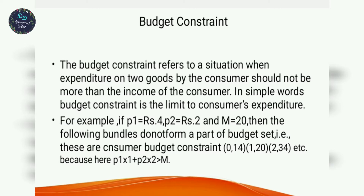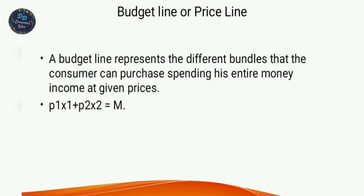The budget constraint p1·x1 + p2·x2 = M shows the limit on bundles the consumer can afford. For example, with p1=4, p2=2, and M=20, different bundles satisfy this constraint. The budget line represents the different bundles that the consumer can purchase by spending their entire income at given prices.